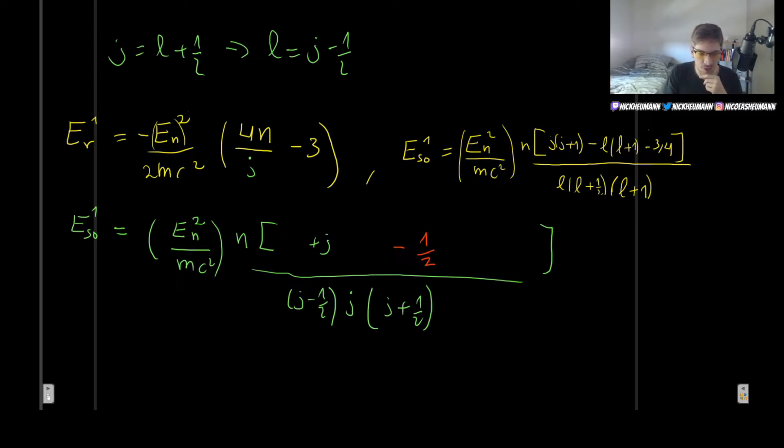And now notice that we have J minus one-half. So this is the same as this, so we can also simplify that. So maybe just write the N over here, right? So N here, and we can get rid of this part. And this is considerably simpler. So let's now plug this into the formula for the fine structure, so basically just sum these two together.